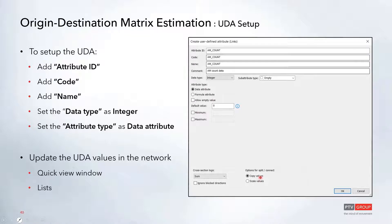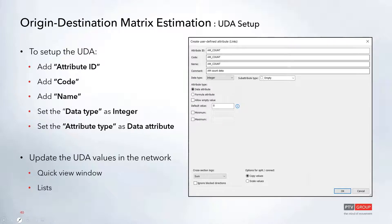From here you can add in the attribute ID as well as the code and name. If you type in the attribute ID at the top, the code and name will fill in automatically with the same value. You can also add a comment, and in this case you'll probably want to leave the type as an integer and have it set to the data attribute.